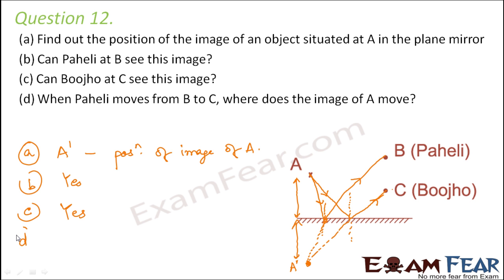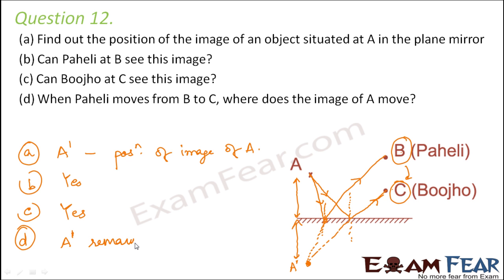When Paheli moves from B to C, where does the image of A move? At both positions B and C, Paheli can see the image at A-dash. Paheli's movement from B to C makes no difference to the position of the image, because image position depends on the position of the object, which is still at A. So the position of A-dash remains unchanged.